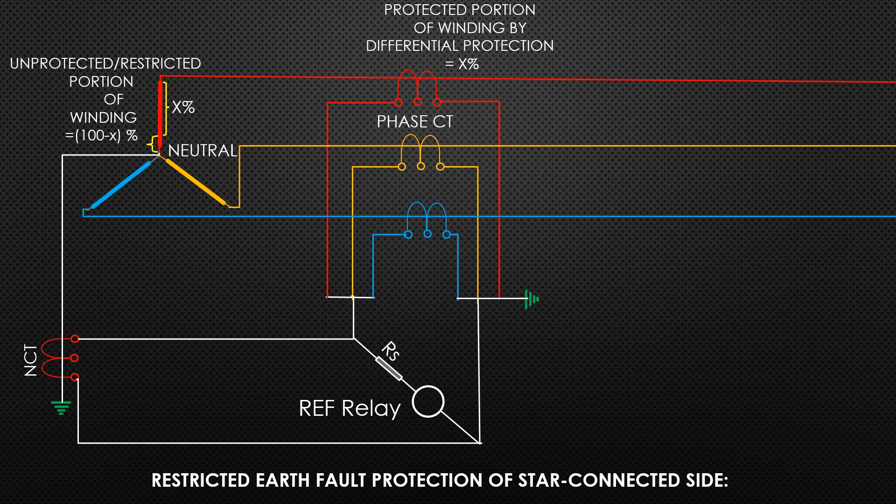Hence fault current would be low. If the relay is kept at a setting to sense such faults, it has to be too sensitive and would therefore operate for spurious signals, external faults, and switching surges. Therefore, a separate earth fault relay is incorporated in the protection circuit, operating for earth fault current of the order of 5 to 10 percent of rated winding current. Such settings protect a restricted portion of the winding, hence the name Restricted Earth Fault protection.